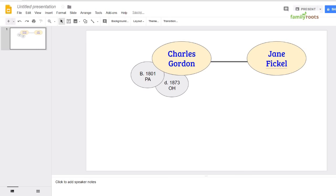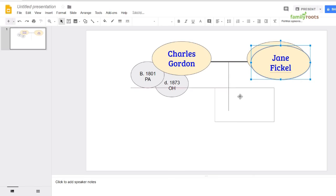And now I have Charles connected to Jane with this line. You can always add more lines in the same fashion. You can add more bubbles. I'm just repeating the steps that I did before.